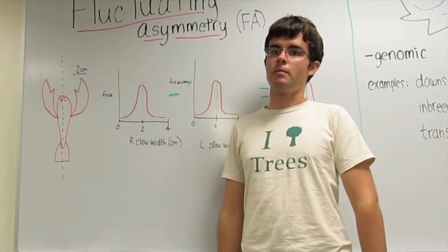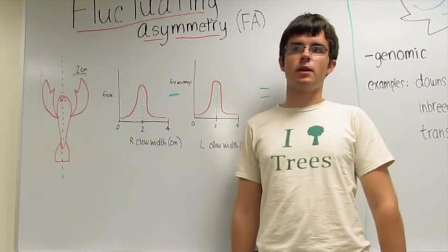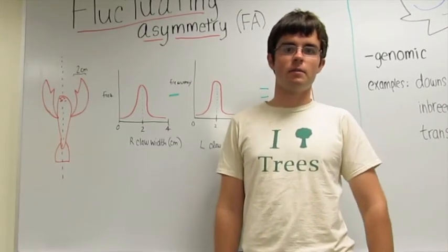Today I'm going to talk about a paper by P.A. Parsons named Fluctuating Asymmetry, a biological monitor of environmental and genomic stress.